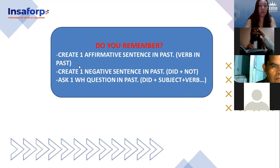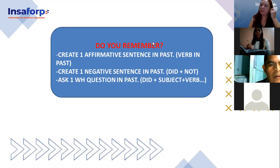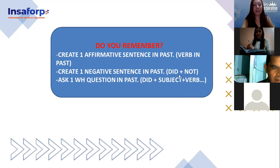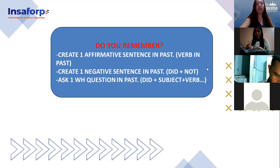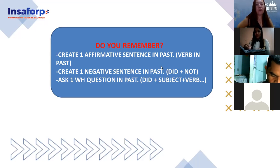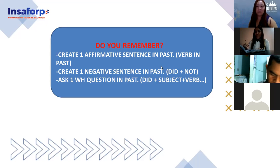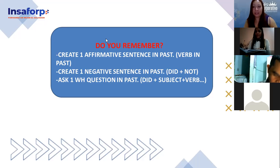Okay, here's what we're going to do. The next task is to create one negative sentence in past — which is also what we saw on Friday. Just in case you couldn't review, the structure uses 'did not': subject, did not, verb. The verb doesn't change — it stays in base form because 'did' carries the change. For example: I did not eat pizza last weekend. My father didn't visit me yesterday.